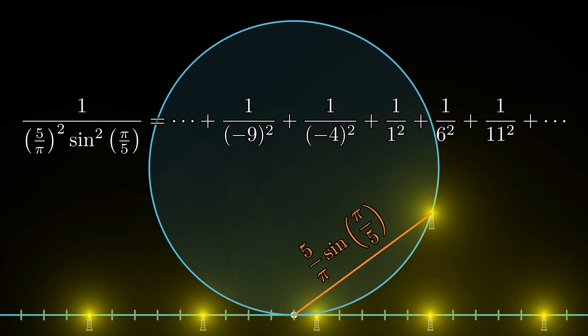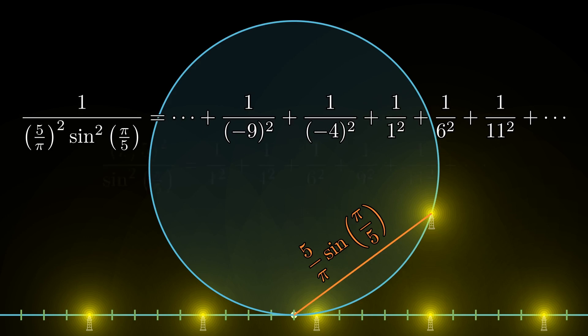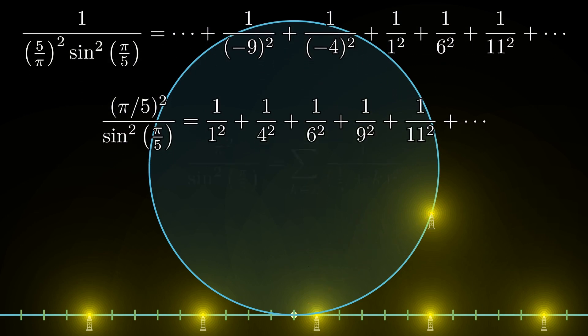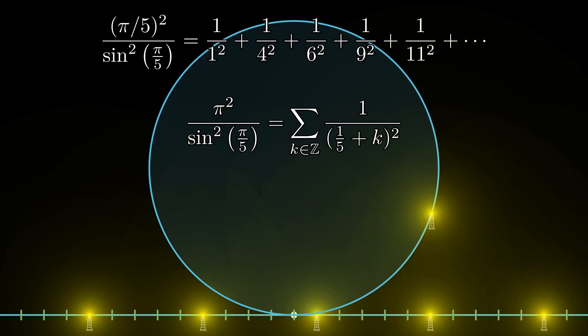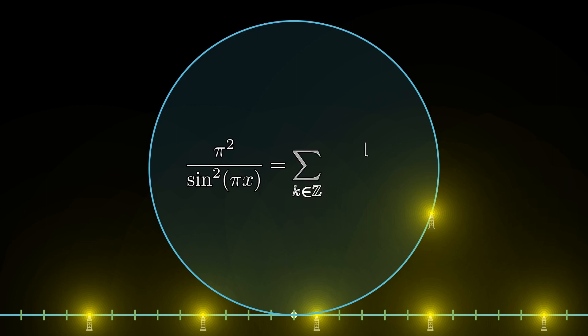Instead of having all the integers as in the Basel problem, we now have a way of calculating the sum of inverse squares of numbers that leave a remainder of plus or minus 1 when divided by 5. To make it more general, we can rephrase this equation and collect all the terms where the number 5 shows up, giving a hint of what we should get if we place our initial lighthouse at an arbitrary angle. Using this, we can claim that π²/sin²(πx) equals the sum of 1/(x+k)² where k runs over all integers.